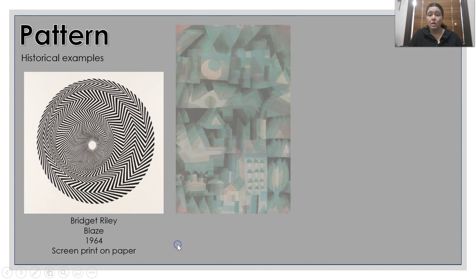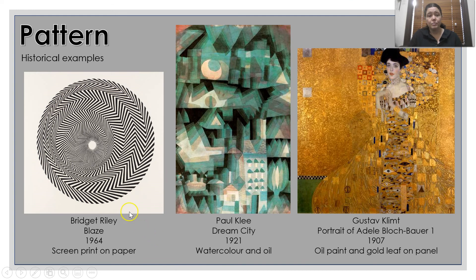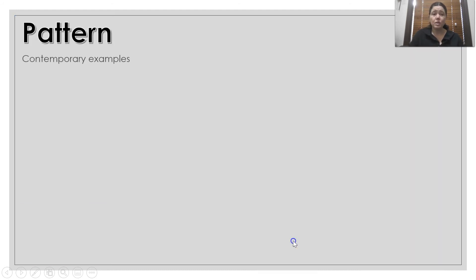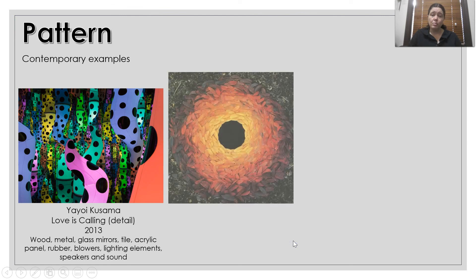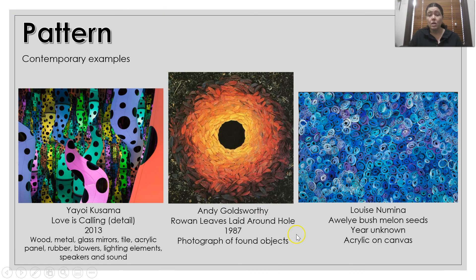Some historical examples of pattern — they're all showing pattern in a different way. You've got Klee with the different types of patterns with the shapes, and obviously the patterns within the dress of the Klimt work. Some contemporary examples of pattern showing it in different ways — using colour, using shape, using repetition.